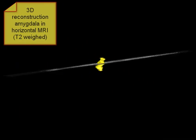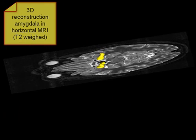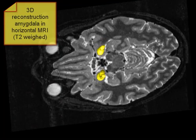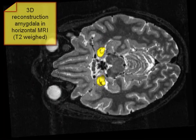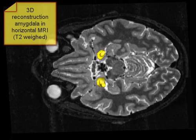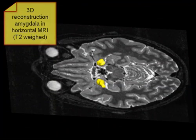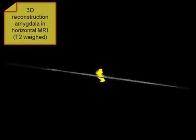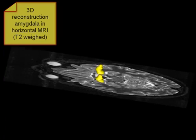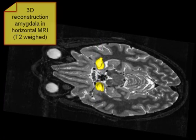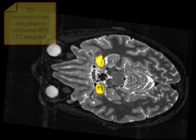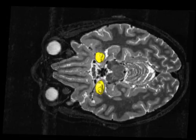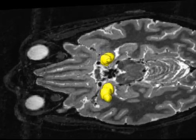The yellow structure in this T2-weighted MRI is a 3D reconstruction of the amygdala. There is a close relationship between the amygdala, which is in front, the tip of the inferior horn of the lateral ventricle, and then, more posteriorly, the hippocampus. Note its medial temporal position.